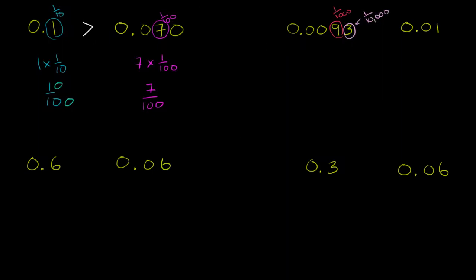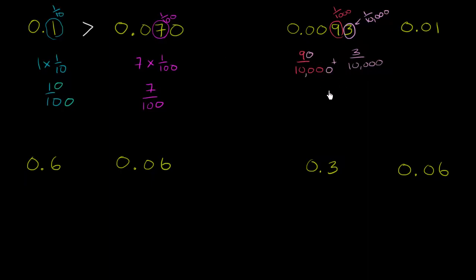So you could literally view 0.093 as 9 thousandths plus 3 ten-thousandths. If you convert 9 thousandths into ten-thousandths, that becomes 90 ten-thousandths. Adding them together, you can write this as 93 ten-thousandths.